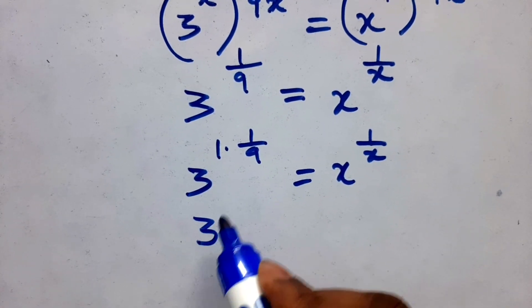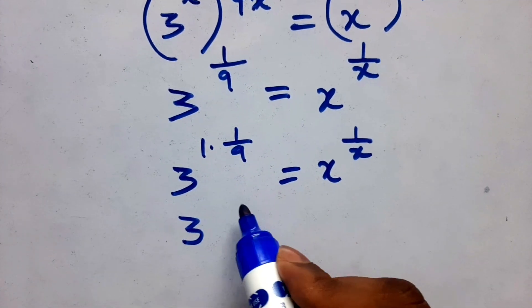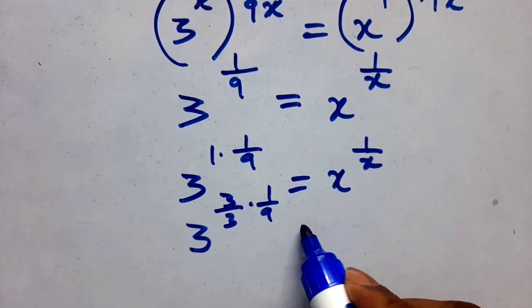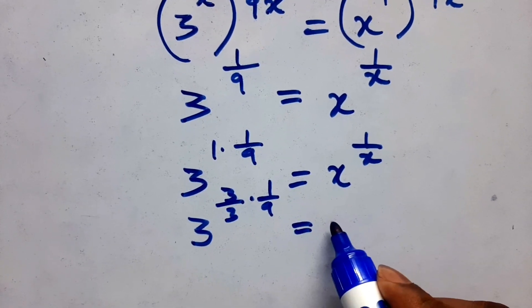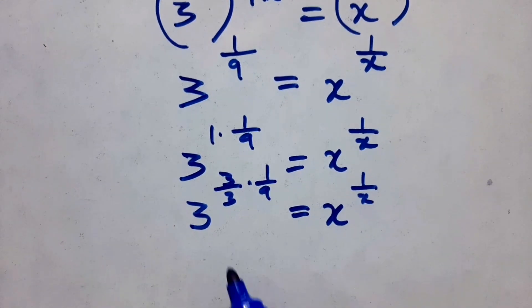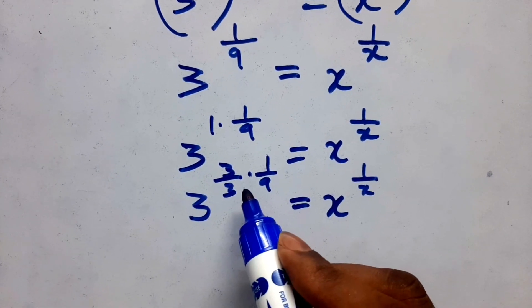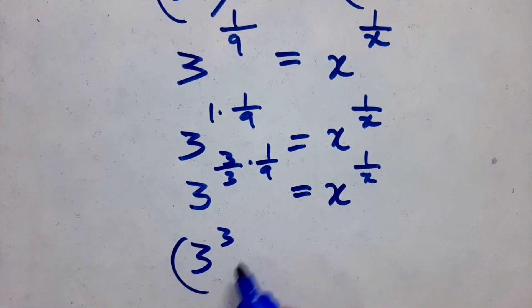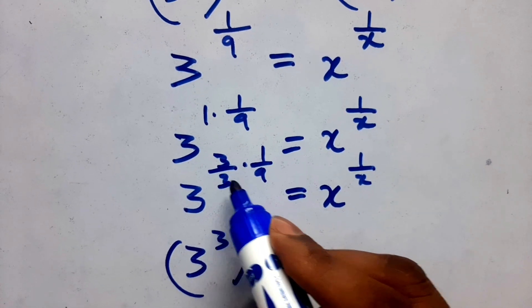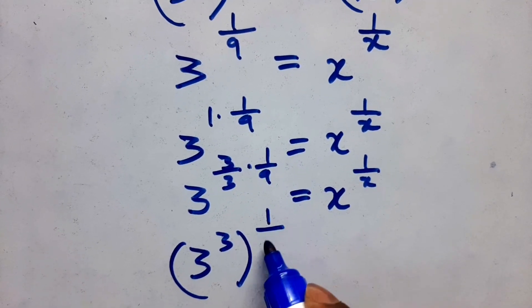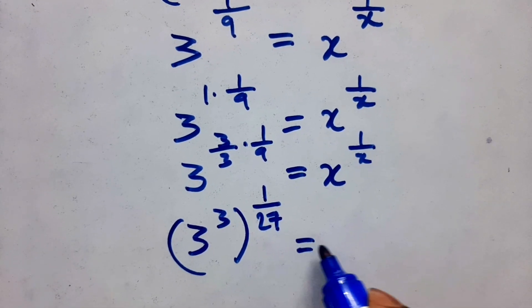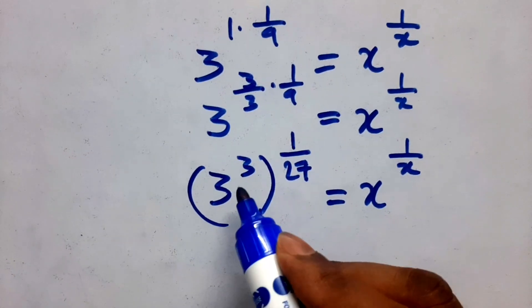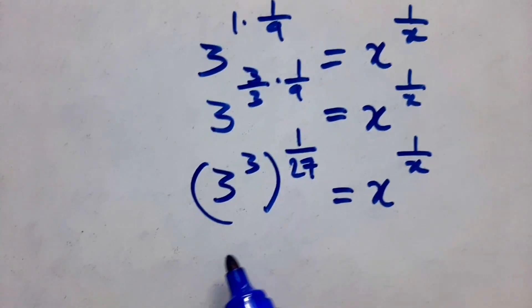Here 3, here 1, it can be written as 3 divided by 3, 3 divided by 3 times 1 by 9 is equal to x to the power 1 by x. 3 cube, what is the 3 cube value? 27. 3 times 3 is 9, and 9 times 3 is 27.